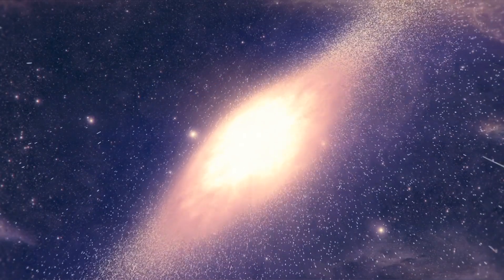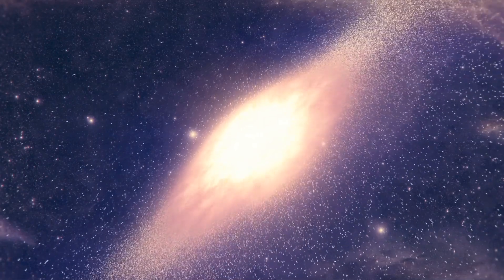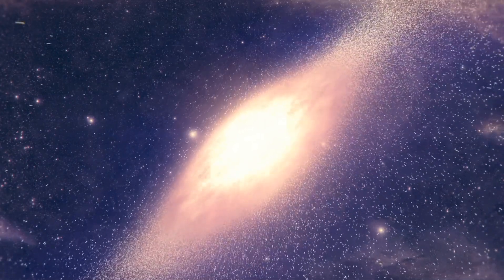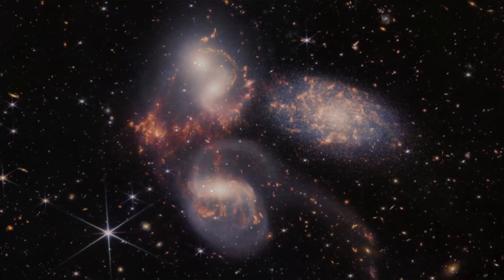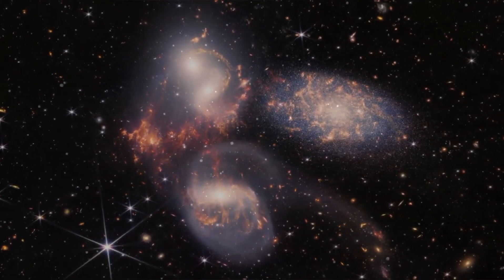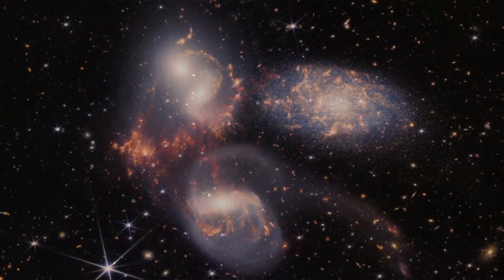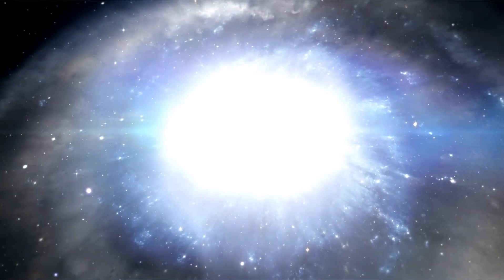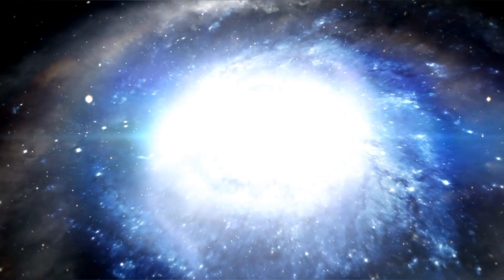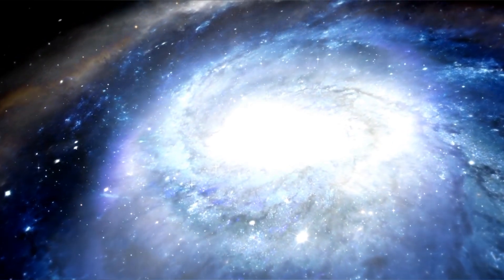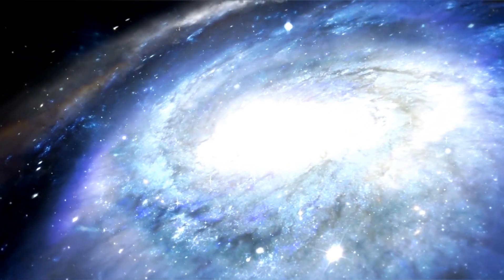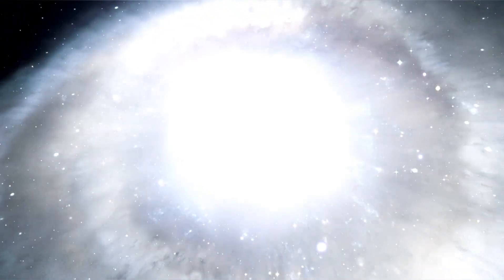What's more, the light from these galaxies had been on a marathon journey to Earth for over 13.4 billion years. To put it into context, these galaxies were already mature when the universe was just a mere 350 million years old. According to our previous cosmic calculations, this era should have seen the birth of baby galaxies, not the existence of colossal, intricately structured galaxies packed with stars shining brighter than those we see today.